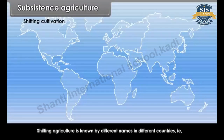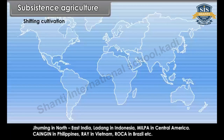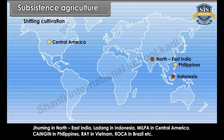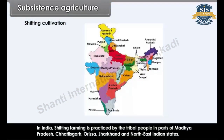Shifting agriculture is known by different names in different countries. In India, shifting farming is practiced by the tribal people in parts of Madhya Pradesh, Chhattisgarh, Orissa, Jharkhand and North East Indian states.